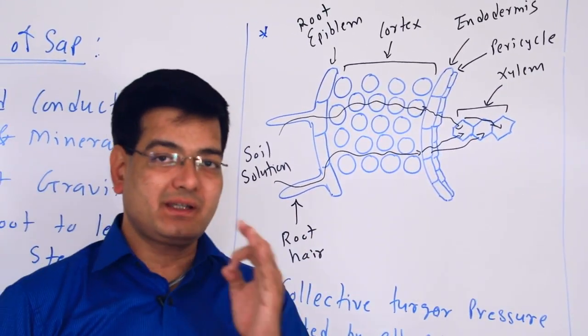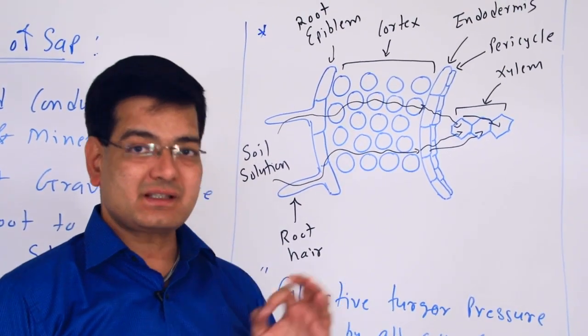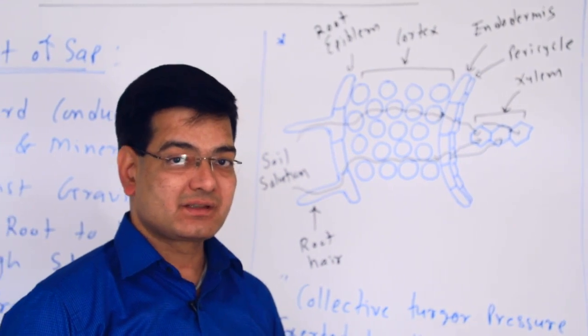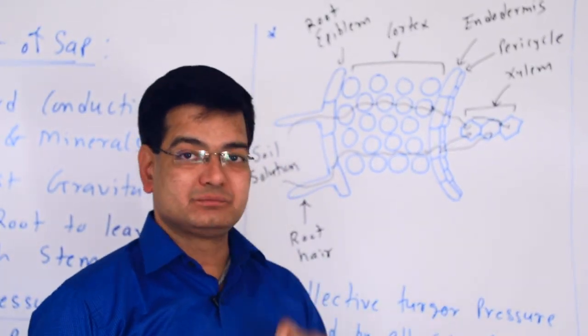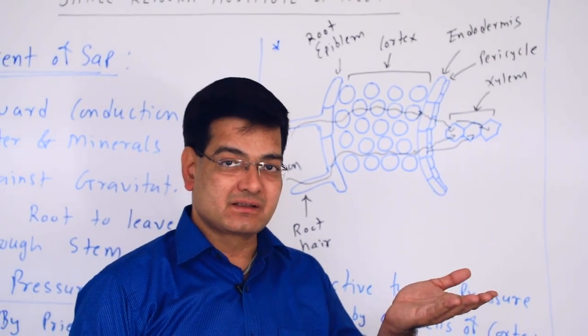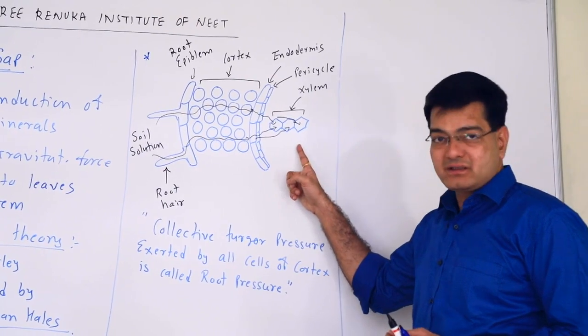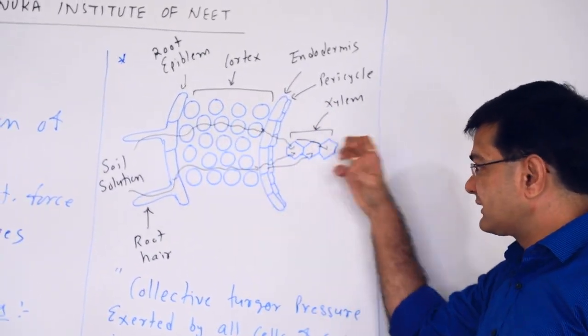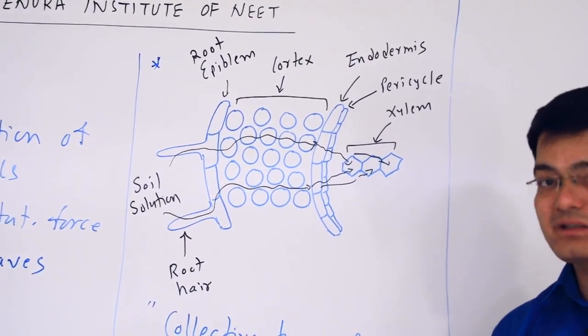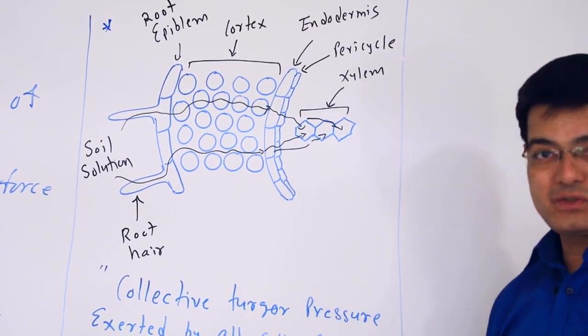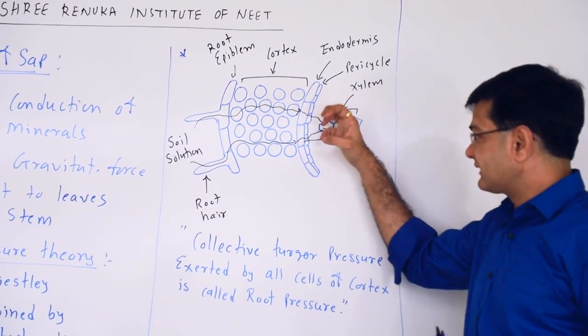When water enters into the xylem, along with water, mineral salts also enter and are deposited inside the xylem. In the xylem, water and minerals accumulate. When mineral ions accumulate inside the xylem vessel, the water potential decreases. When solute concentration increases, water potential decreases. As a result, water potential in the xylem decreases, so more water is absorbed by the cells towards the xylem. Water moves from high water potential to low water potential. There is always high water potential in soil solution and low water potential in xylem vessels.